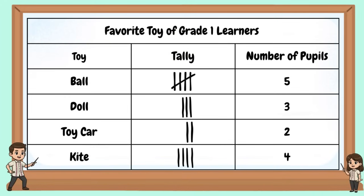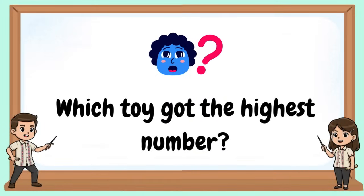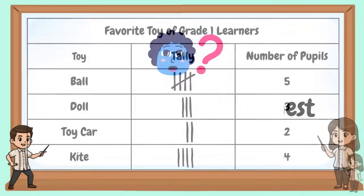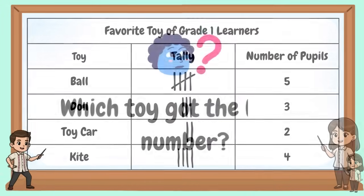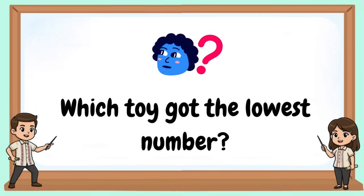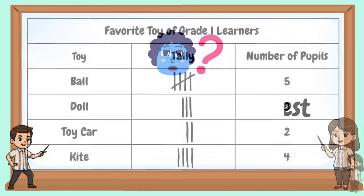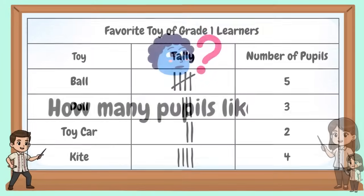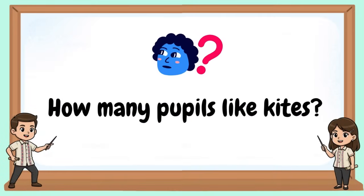In this table — favorite toy of Grade 1 learners — five pupils like ball, three pupils like doll, two pupils like toy car, and four pupils like kite. How many pupils like kites? Which toy got the highest number? Which toy got the lowest number?